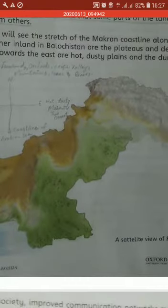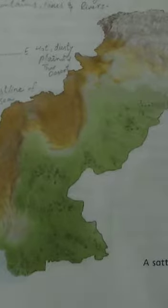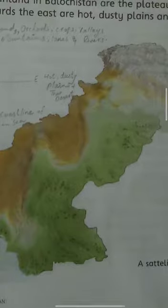To the east you can see here is the greenery — green, dusty, hot plains. To the west you can see the deserts. Here are the deserts and plateau.